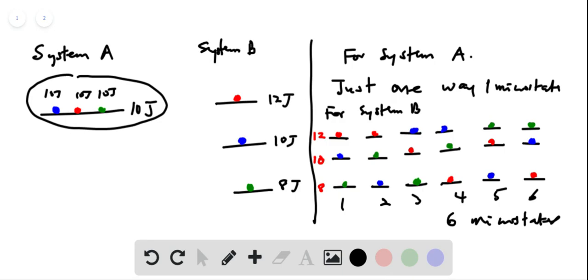So that provides an answer to the first question about how many ways can we distribute the molecules. So the next question is which system has the greater entropy.